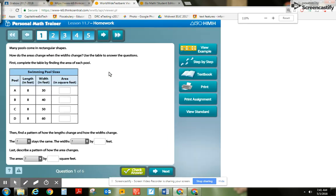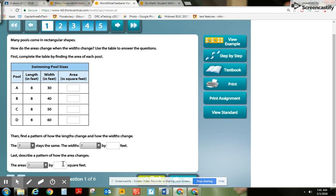Here are the three problems that I want to show you. The first one is number one. This whole problem is very overwhelming, there's some big words, there is a graph, there's some different drop down menus and things. Not only do we have to do math, we also have to do a lot of reading and thinking. It reads: many pools come in rectangular shapes. How do the areas change when the widths change? Use the table to answer the questions. First, complete the table by finding the area of each pool. So area we know is length times width.